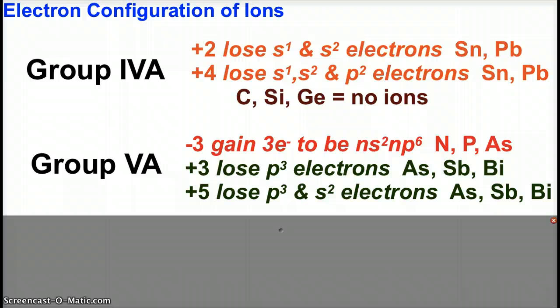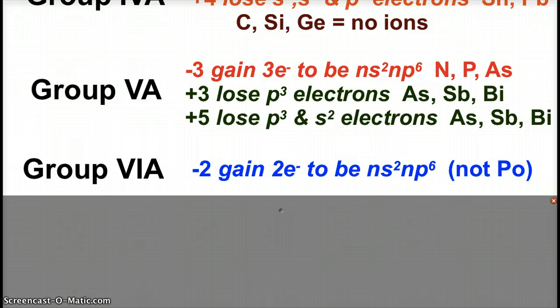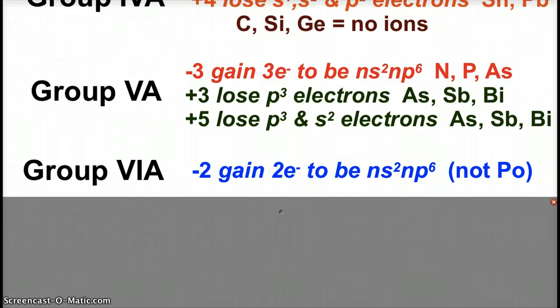Group 5A is where we start to see some anions show up. Nitrogen, phosphorus, and arsenic can gain three electrons in order to become like neon and have ten total electrons, eight valence electrons. But the bigger guys—arsenic, antimony, and bismuth—can also form positive ions. They can form plus three ions by losing their p three electrons. They can also form plus five by losing the p and s electrons in their valence shell.